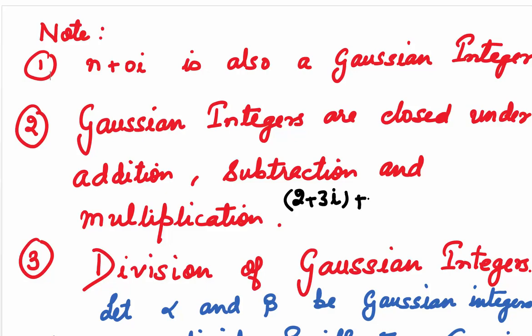Let us see. If we are adding 2 plus 3i and 3 minus i, we add the real parts to get 5, and add the imaginary parts to get 2i. You can see that 5 and 2 are both integers, so we still get a Gaussian integer.